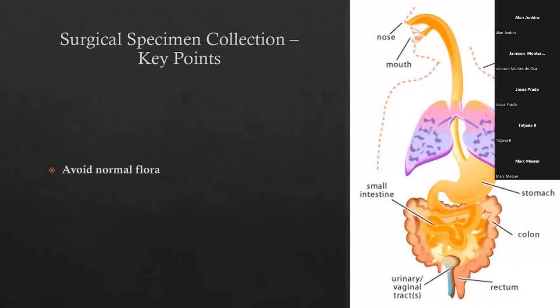Some key points when talking about surgical collection. Avoid normal flora as much as possible. This diagram shows all the different parts of the body where there is normal flora — everything exposed to the outside: the skin, the entire upper respiratory tract, the lungs to some extent, the whole GI tract, the whole urinary tract, the genital tract. They've got mucosal surfaces with lots and lots of normal flora. We need to avoid that as much as possible.